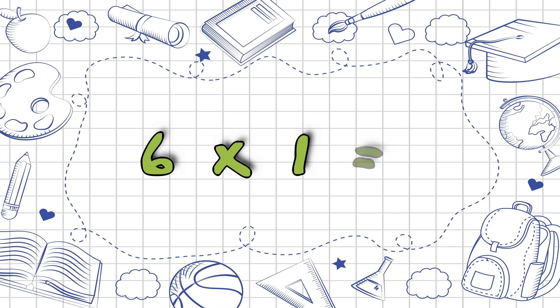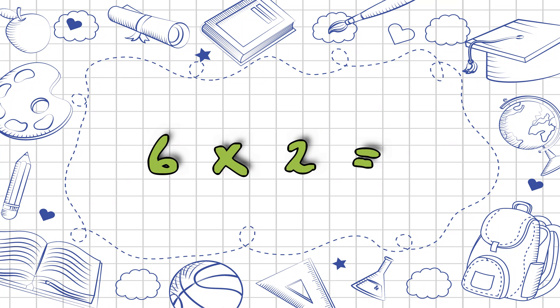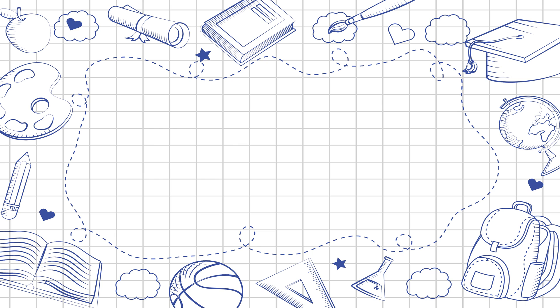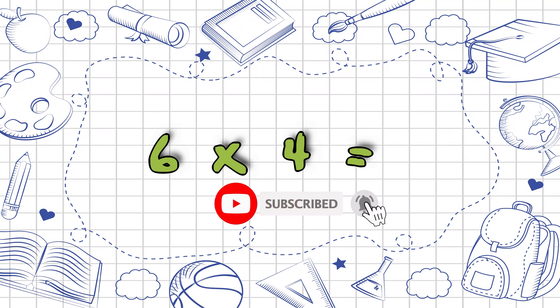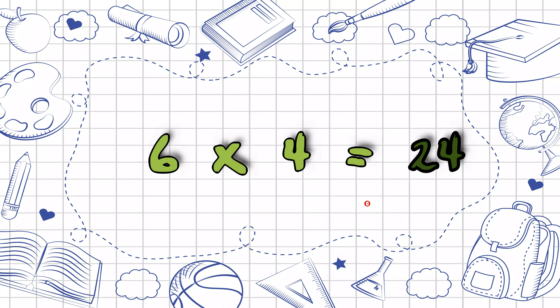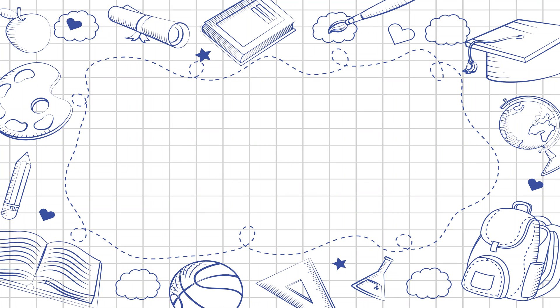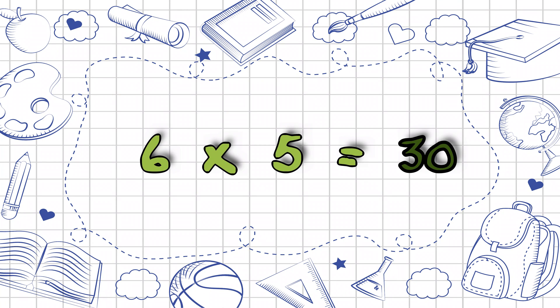Six ones are six. Six twos are twelve. Six threes are eighteen. Six fours are twenty-four. Six fives are thirty.